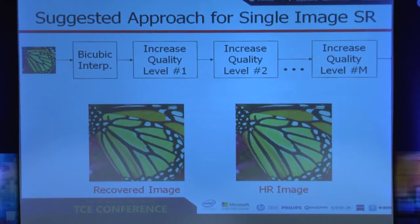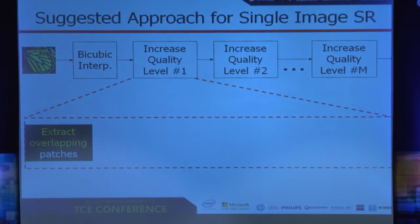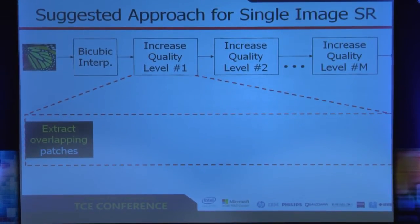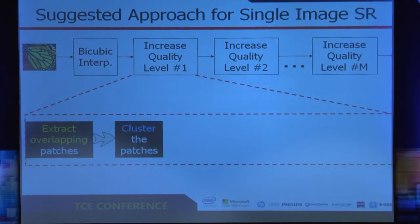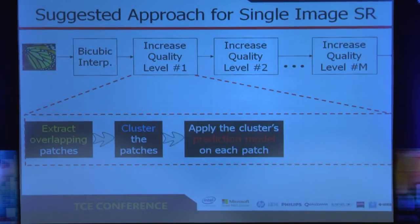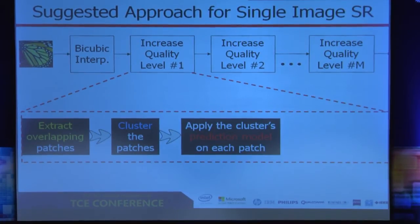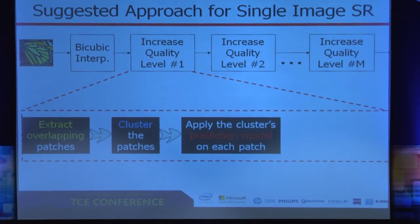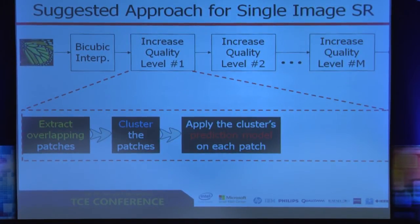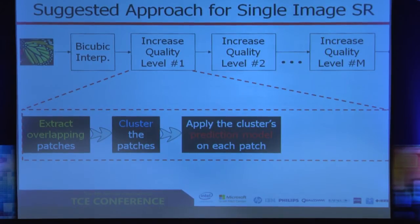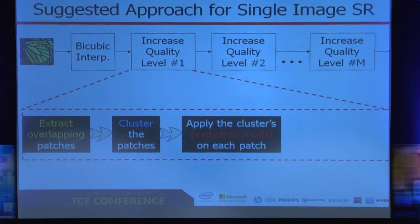So how does it work? Let's dive into one of the levels and see the stages. Given an input image, we extract overlapping patches, then we cluster the patches, then we apply the prediction model associated with each cluster on all patches assigned to that cluster. Once we have gone over all clusters, we have predictions for all patches in the image, and we can recover the image from the patches by averaging on the overlaps.